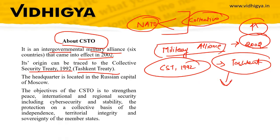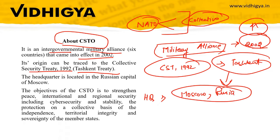The headquarter of CSTO is located in Moscow, Russia. This is another important factual detail. The objective of CSTO is to strengthen peace, international and regional security, including cyber security and stability.